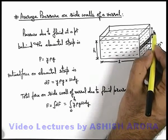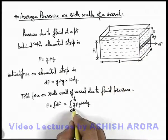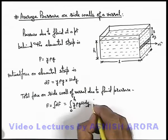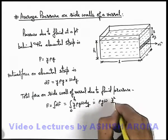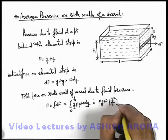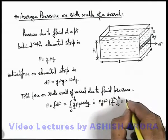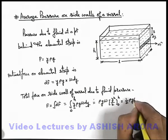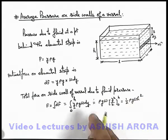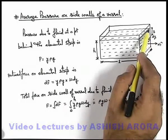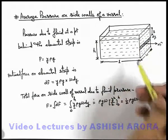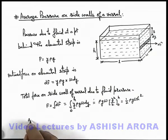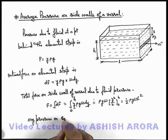Integrating from 0 to h, with y as the variable and ρ, g, w as constants, the result is ρ·g·w multiplied by y²/2 evaluated from 0 to h. This gives a total force of F = ½·ρ·g·w·h². This is the total force acting on the side wall in contact with the fluid over area h·w.